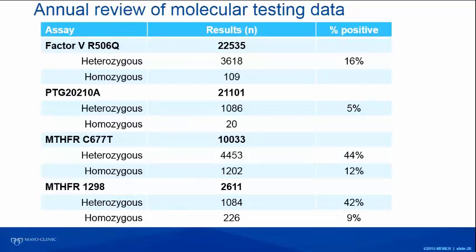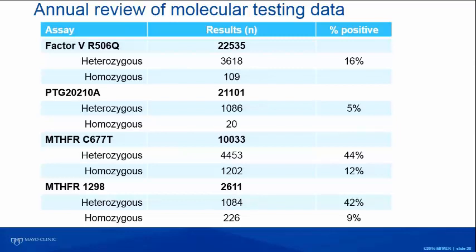Looking at our annual molecular data: we have about 22,000 Factor V Leiden assays and 21,000 prothrombin assays. But I'd like you to focus on MTHFR — over 10,000 of one variant and about 3,000 of the other, with 44–40% heterozygous. I'm unsure why physicians ordered this test; older literature linked it to venous thrombosis and pregnancy loss, but more contemporary studies don't support that. The right approach is to do the homocysteine level first — if normal, you don't need the DNA test.